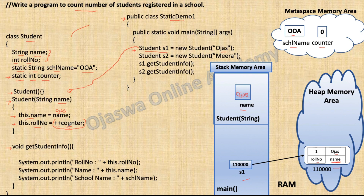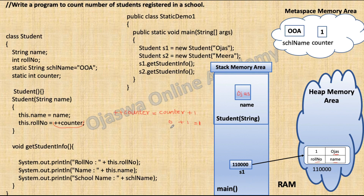Here in our program, we are using the pre-incrementation method. Pre-increment happens when the increment operator precedes the variable, and in this case, the value is first incremented and then assigned. The increment operator is preceding the variable, so when the increment operator is used, the value of the variable is incremented by 1. Value of counter is 0 + 1 = 1. After incrementation, the value of static variable counter is modified to 1, and then this modified value 1 is assigned to the instance variable role number. Hence, value 1 is stored inside the instance variable role number belonging to object s1.